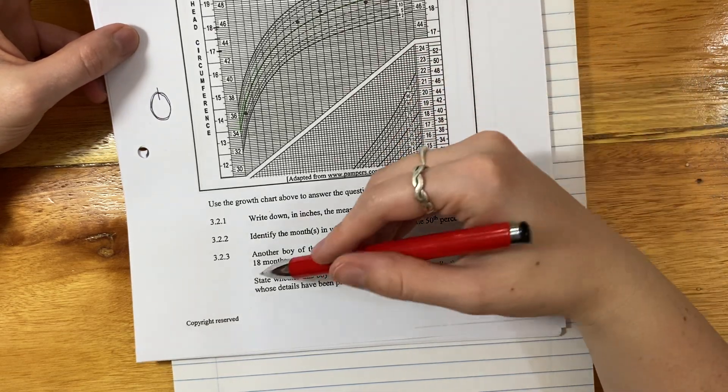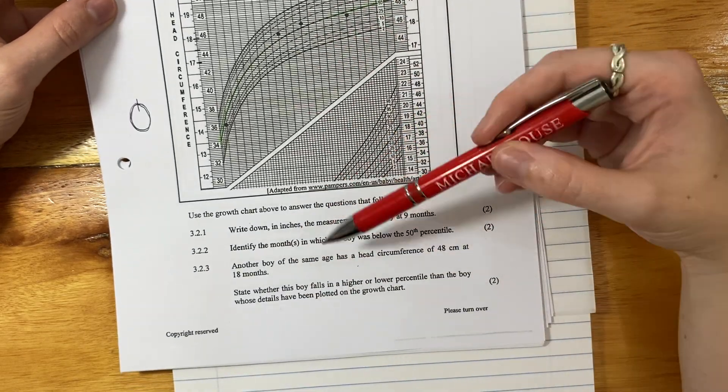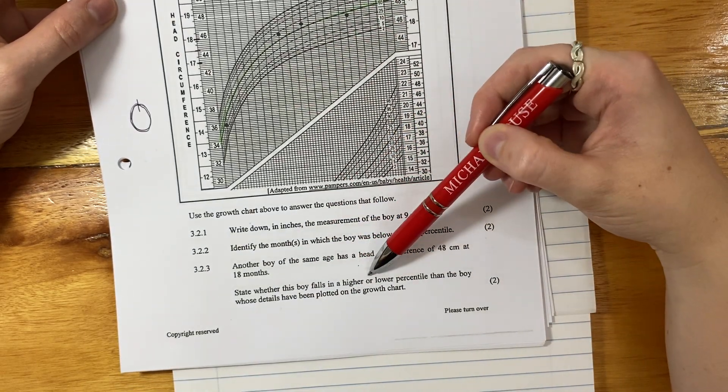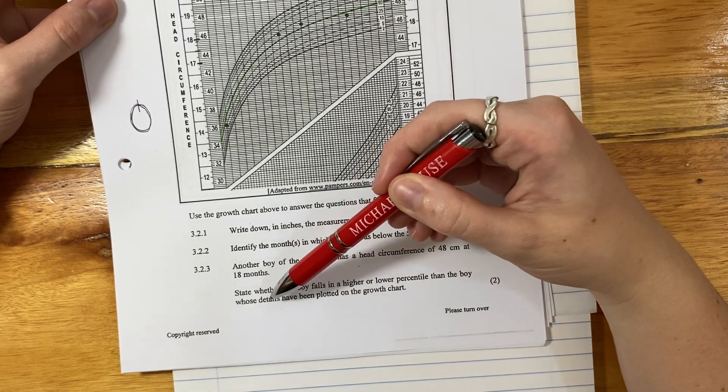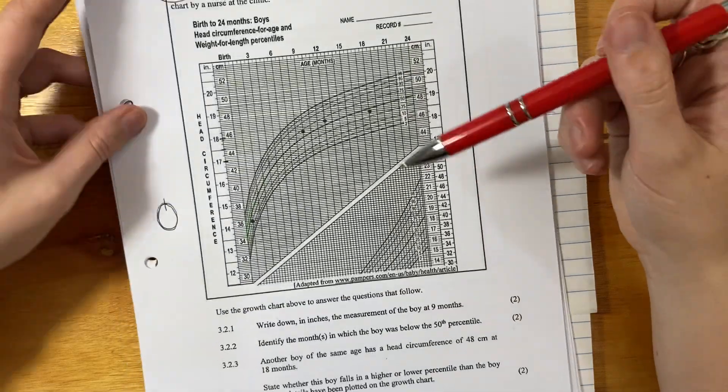Of 48 centimeters at 18 months. So this is another boy. It's not this boy. State whether this boy falls in a higher or lower percentile than the boy whose details have been plotted on the graph, on the growth graph.